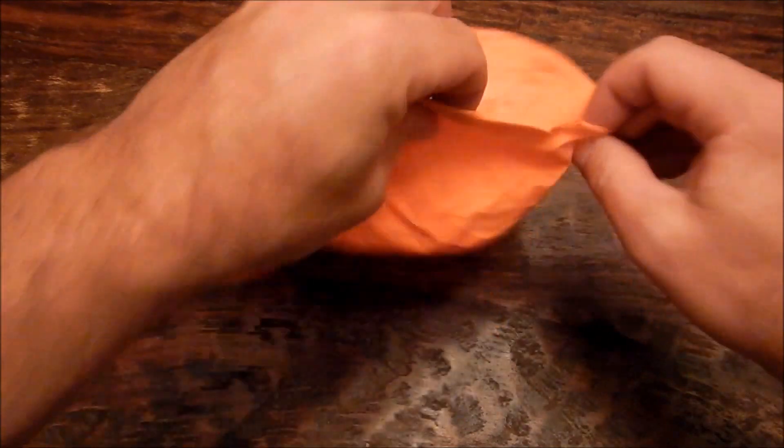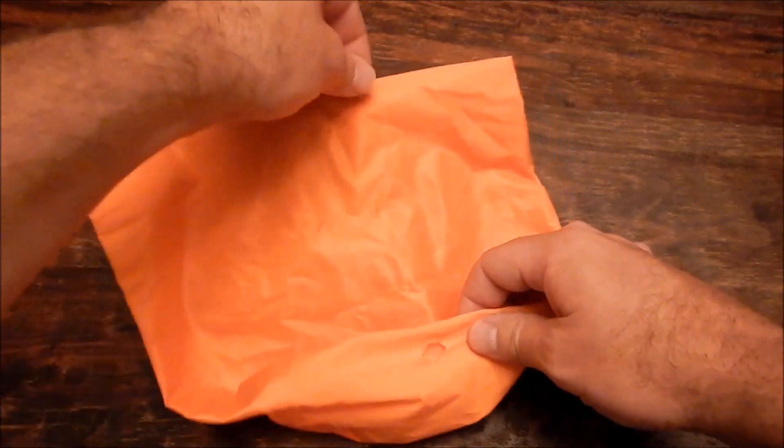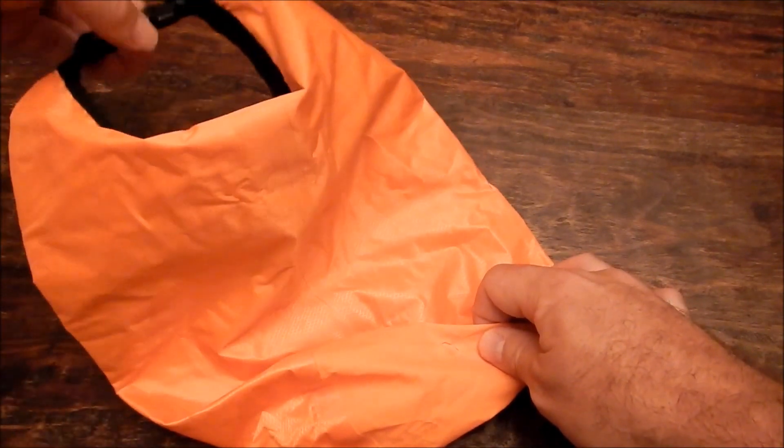Right in the middle of the bottom where the bulkhead connector is going to go through. And you'll end up with something that looks like that right in the middle of the bottom of the dry bag.